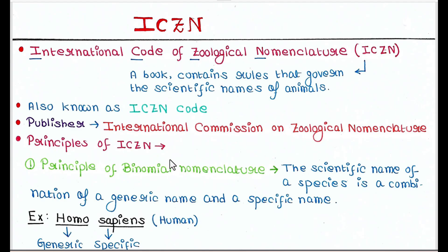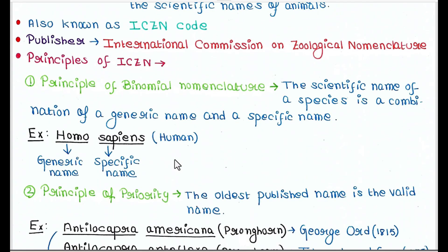Let's talk about the principles of ICZN. So basically, there are six principles. First is principle of binomial nomenclature. The scientific name of a species is a combination of a generic name and a specific name. For example, the scientific name of human is Homo sapiens. So Homo is the generic name or genus and sapiens is the specific name or species.